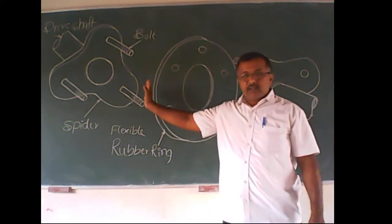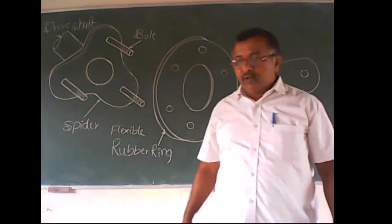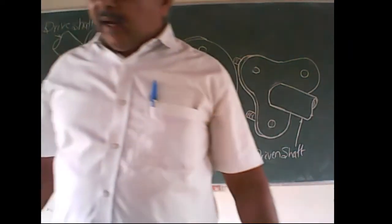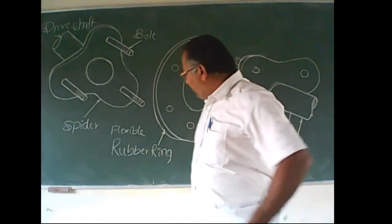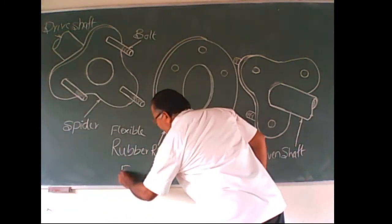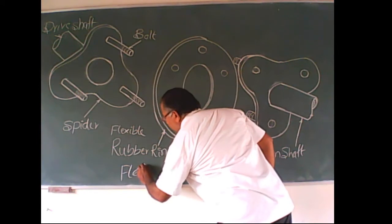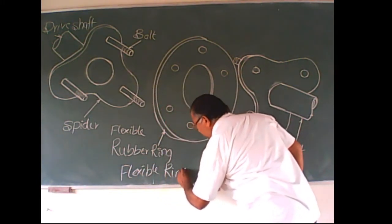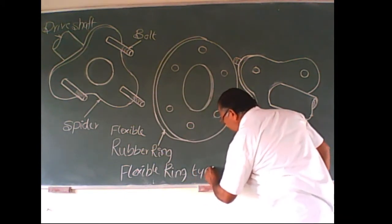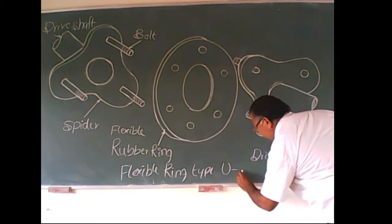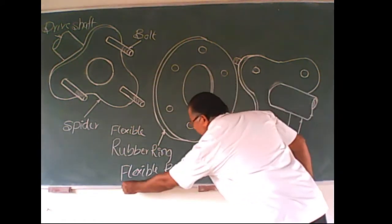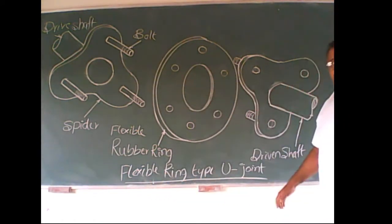Today, next other type of universal joint that is flexible ring. Flexible ring type universal joint.